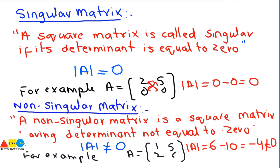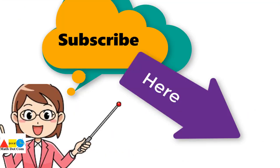So on the basis of the determinant, you can classify a matrix as singular or non-singular. Based on these classifications, we can find the inverse of a matrix, which we will discuss in our next lecture. For now, just understand the concepts of the determinant, singular matrix, and non-singular matrix. Thank you for watching — please subscribe to our channel for more updates.